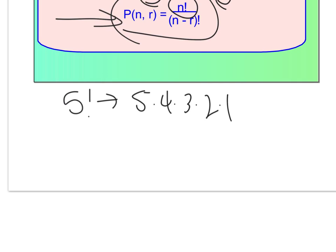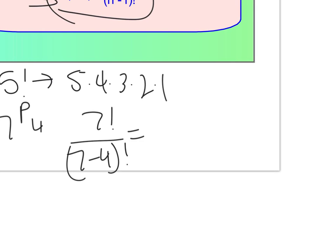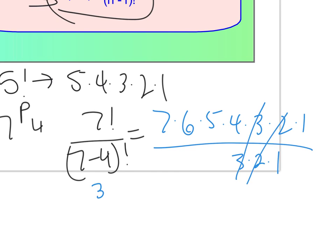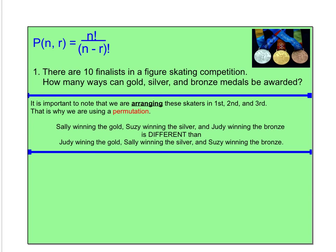So if I go back to the previous problem, it would look like this. Seven players for four spots. That's going to be seven factorial over seven minus four factorial, which drawn out was going to be seven times six times five times four times three times two times one, all over three factorial, three times two times one. So threes cancel out, twos cancel out, ones cancel out, seven, six, five, four. That's what I had to multiply out.